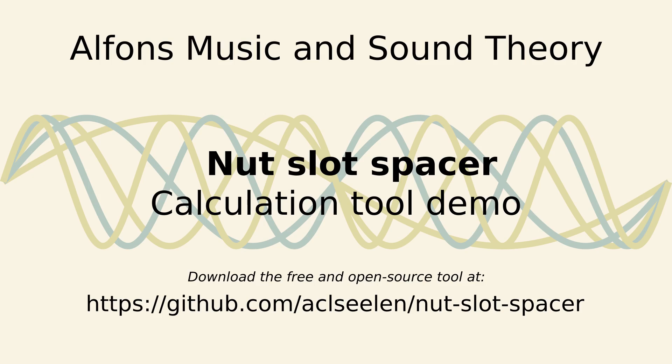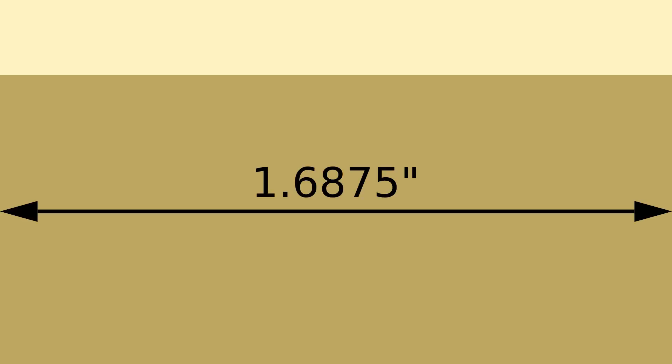You might wonder: why do we need a tool for such a simple calculation? Imagine a fingerboard at the guitar nut that should guide your strings — let's say 6 for a regular guitar. A common nut width is 1 and 11/16th inch, roughly 43 millimeters. We want to space our strings evenly and need some distance from the edges.